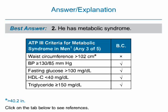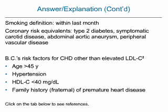According to the ATP-3 guidelines, the criteria for metabolic syndrome in men include any three of the following five measurements: a waist circumference of 102 centimeters (40.2 inches) or greater; a blood pressure of 130 over 85 or higher; a fasting glucose level greater than 100 mg/dL; an HDL cholesterol level less than 40 mg/dL; and a triglycerides level of 150 mg/dL or greater. In the case of BC, he meets exactly four of these criteria: elevated blood pressure, elevated fasting glucose, low HDL cholesterol, and elevated triglycerides. The designation of smoker means any history of cigarette smoking within the last month; therefore, BC is not considered a current smoker.